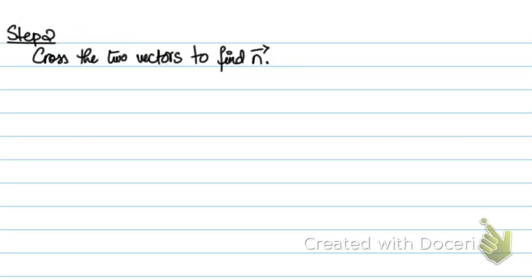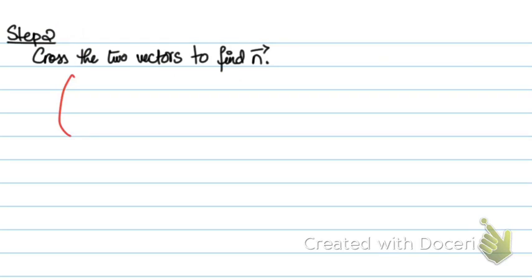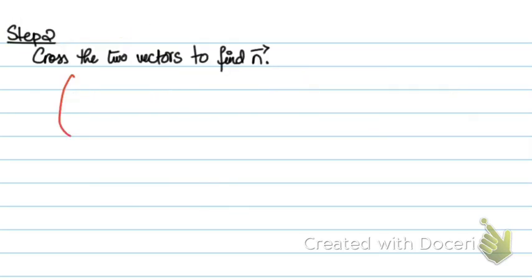Step 2 is you cross multiply the 2 vectors to find the normal to the plane. So, the 2 vectors were, let's go back, (-1, -2, -1) and (1, 0, 0). So, how do you cross 2 vectors?